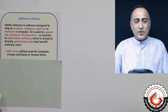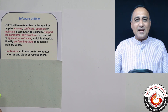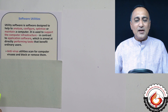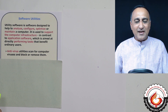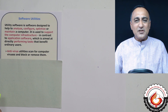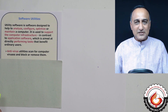Software utilities are like antivirus software — like Norton Antivirus, Avira Antivirus, Kaspersky Antivirus. These are all examples of utilities.